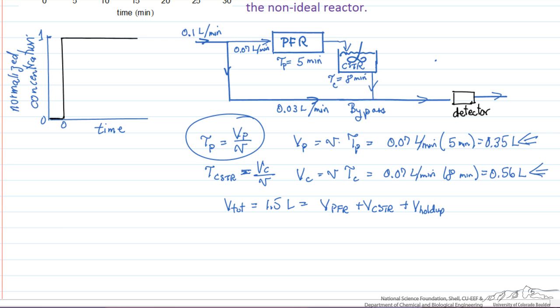Namely some region in the real CSTR that's just not mixed, that's stagnant because of not proper design of the stirrers and the baffles. We can now calculate the volume of the holdup. The volume of the holdup is 0.59 liters.